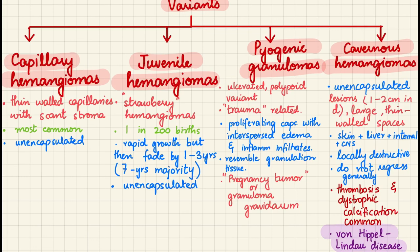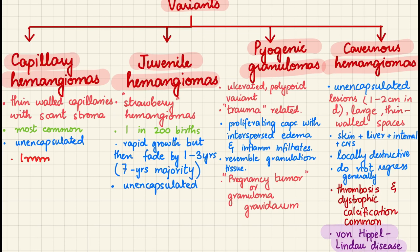Cavernous hemangiomas are unencapsulated lesions larger in diameter — one to two centimeters — compared to capillary hemangiomas which are one millimeter or less. They are present on the skin, liver, internal organs, and CNS. They are locally destructive and generally do not regress. They can be associated with complications such as thrombosis and dystrophic calcification.